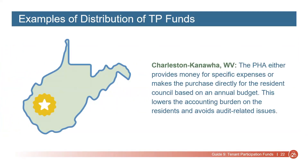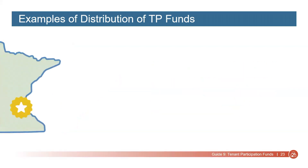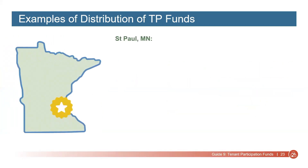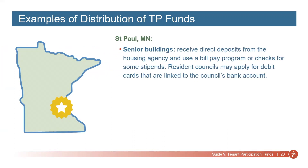Here are a couple of actual examples of how tenant participation funds are distributed to resident councils. In Charleston-Kanawha, West Virginia, the PHA either provides money for specific expenses or makes the purchase directly for the resident council based on an annual budget. This lowers the accounting burden on the residents and avoids audit-related issues. In St. Paul, Minnesota, senior buildings receive direct deposits from the housing agency and use a bill pay program or checks for some stipends.